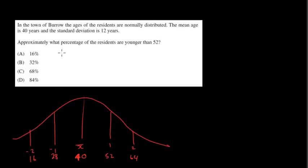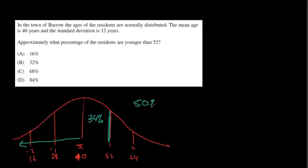Approximately what percentage of the residents are younger than 52? By looking at my table here, 52 is at one standard deviation. We know that section is 34%. We want people who are younger than 52, so that includes one whole half of it — which is 50% — plus that 34%, which gives an answer of 84%, which is D.